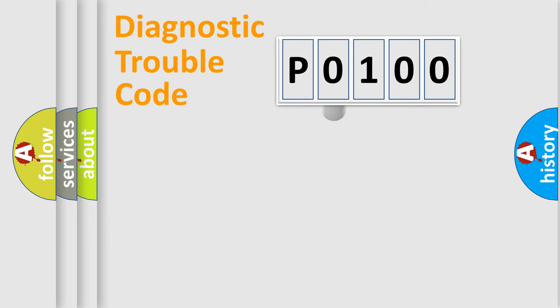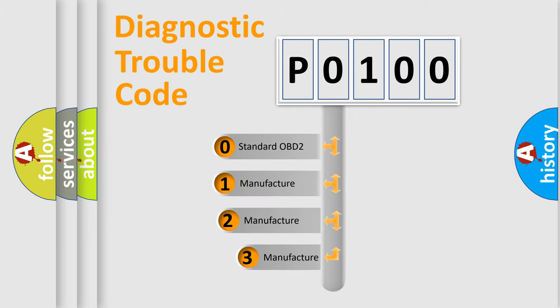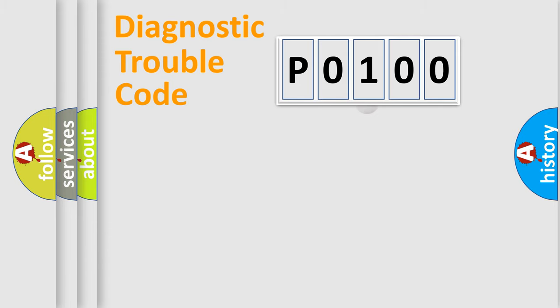This distribution is defined in the first character code. If the second character is expressed as zero, it is a standardized error. In the case of numbers 1, 2, or 3, it is a more specific expression of the car-specific error.